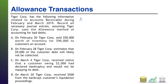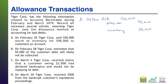Welcome back. We're going to start with A. On February 20th, TigerCore sold $50,000 worth of inventory for $90,000 to customers on account. We debit accounts receivable for $90,000 because customers owe us the price we charged them, which is also the revenue recognized. Because this is a sale of merchandise, there are two pieces: we also credit inventory for $50,000 and debit cost of goods sold for $50,000. This entry establishes the accounts receivable we will then deal with for bad debts.